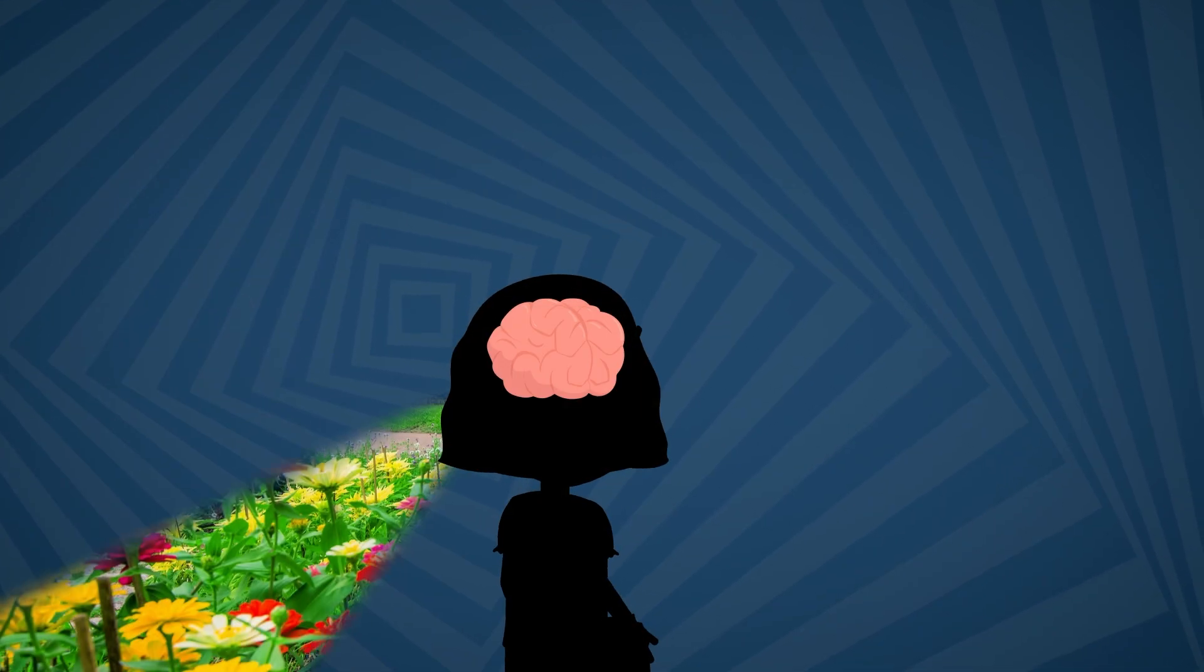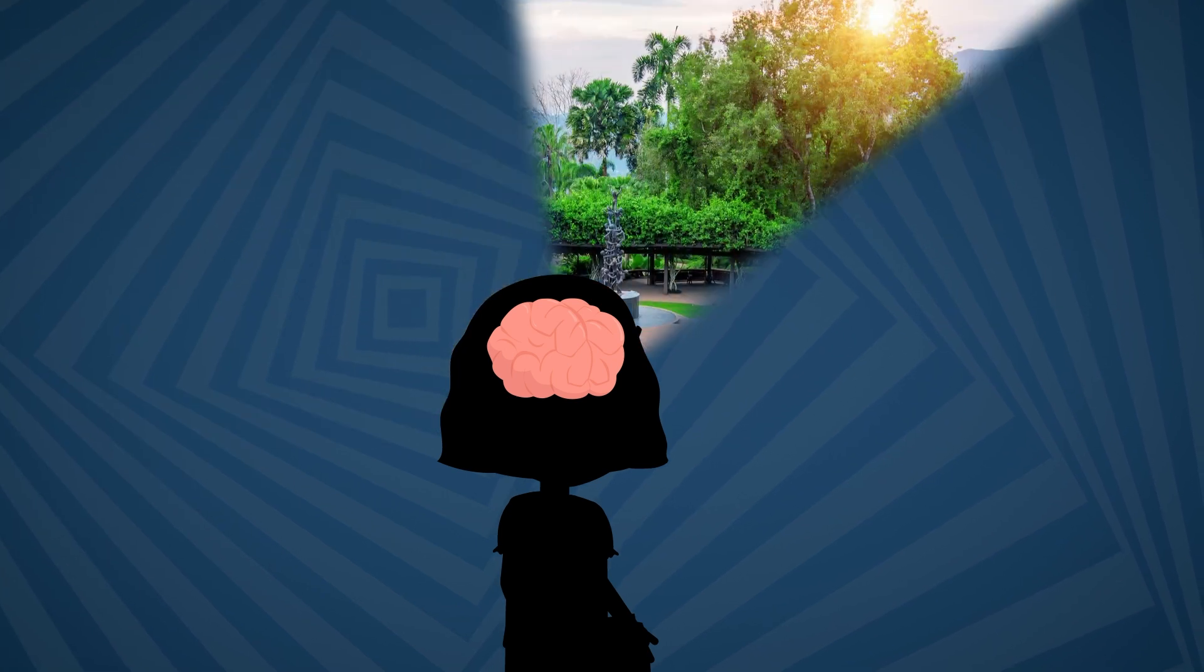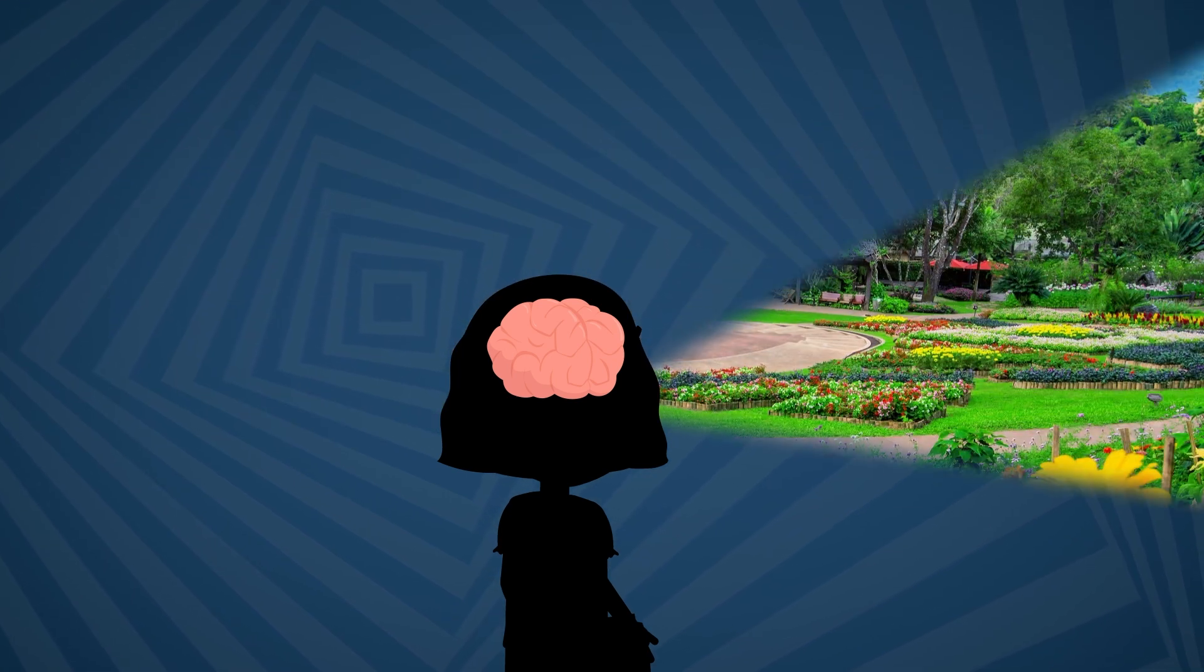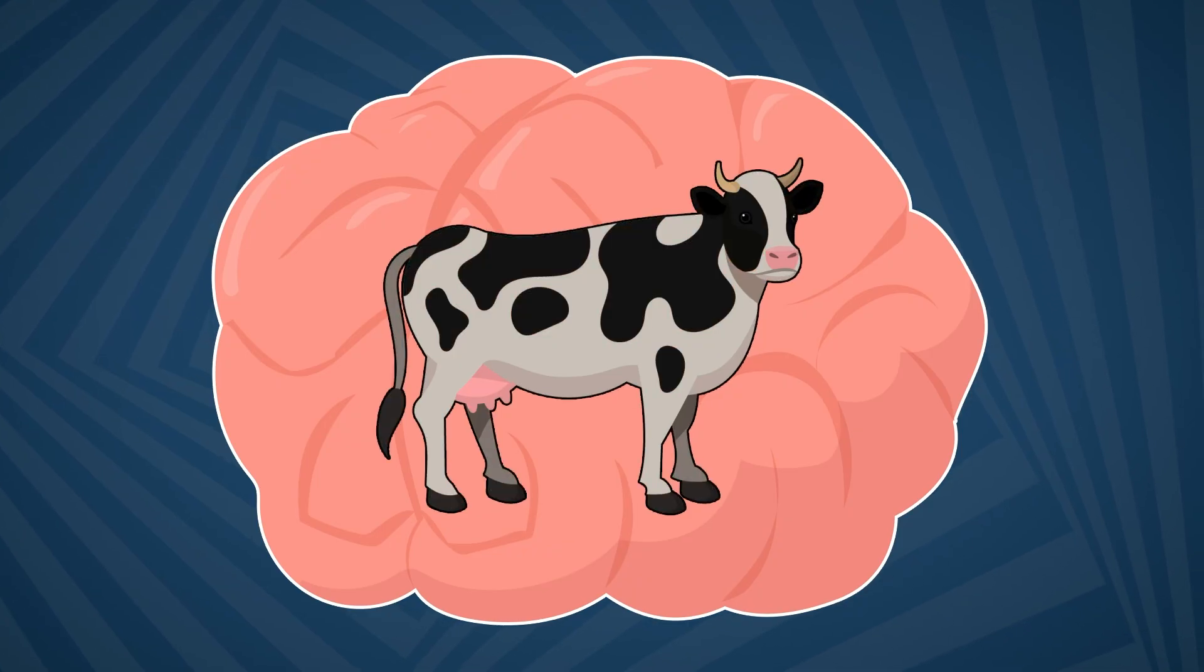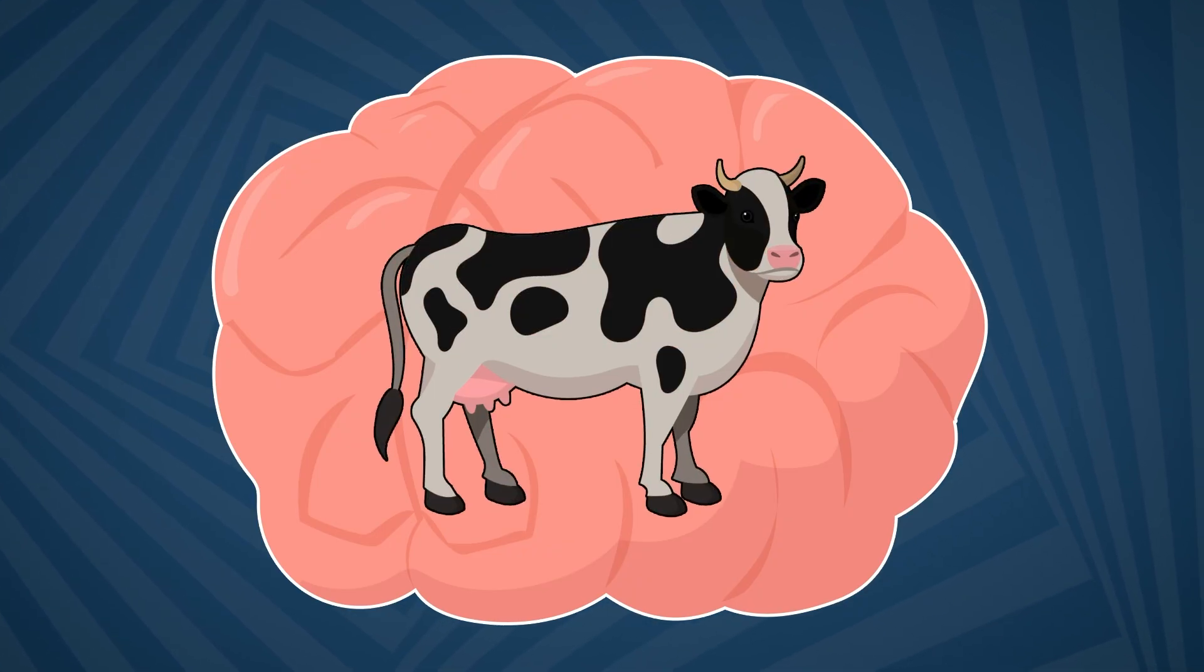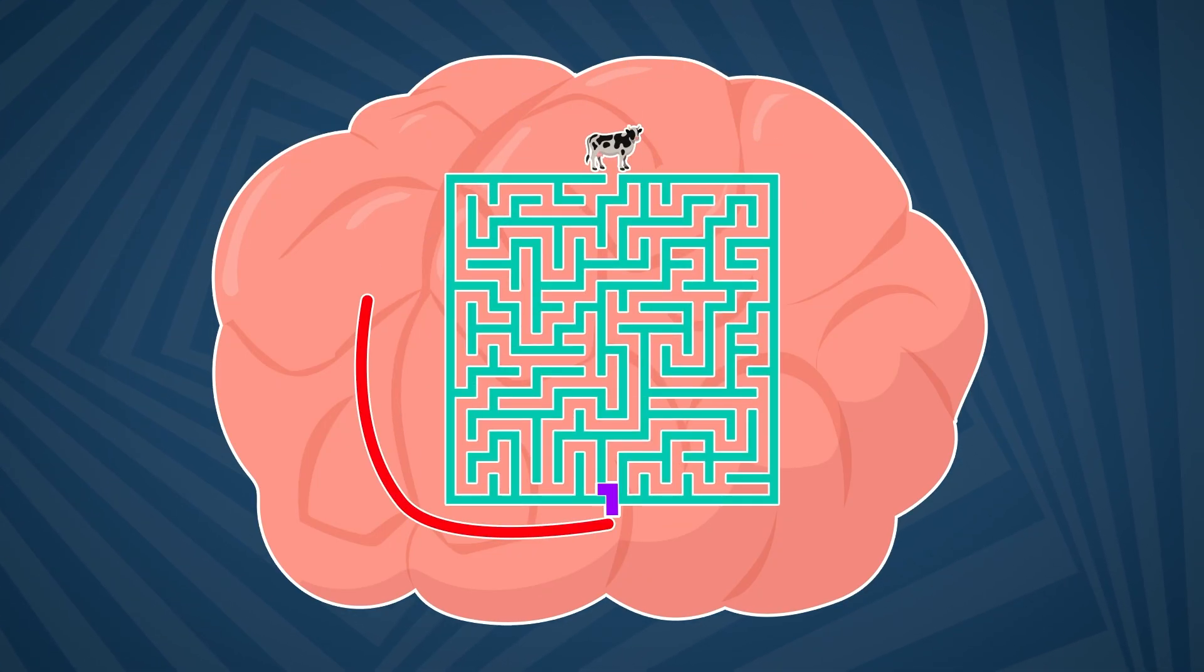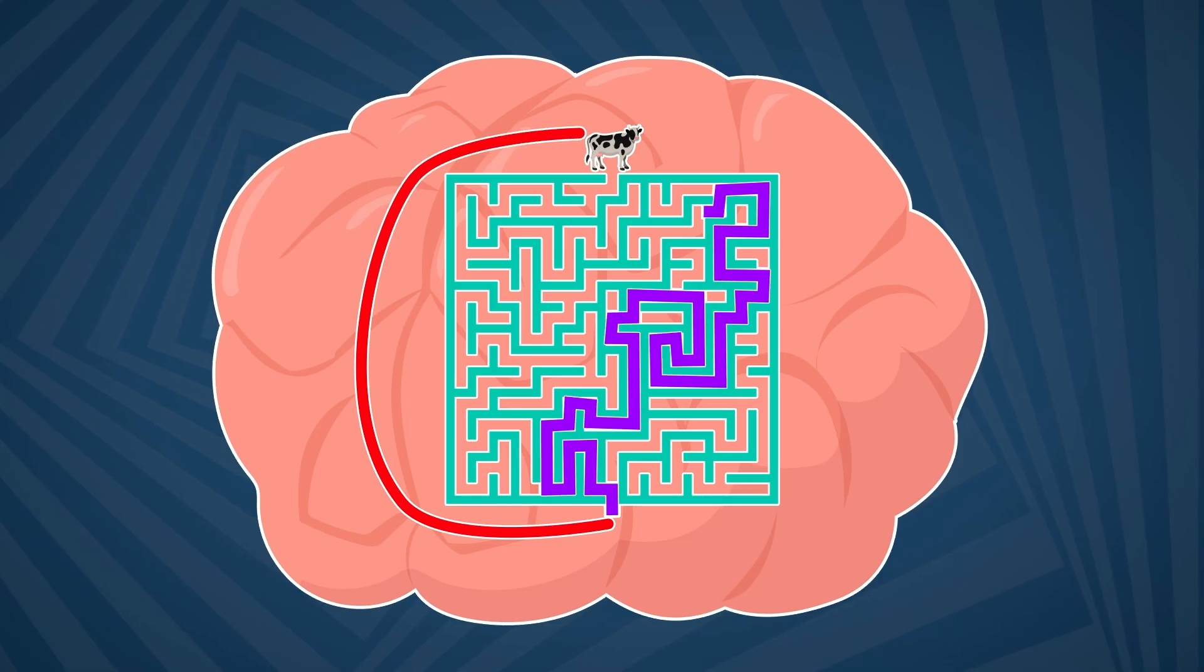Our brain plays a massive role in what we see. Emma learns that the brain processes visual cues, like edges, colours and contrasts, to build a coherent picture. But sometimes, the brain takes shortcuts or fills in gaps, which can lead to optical illusions.